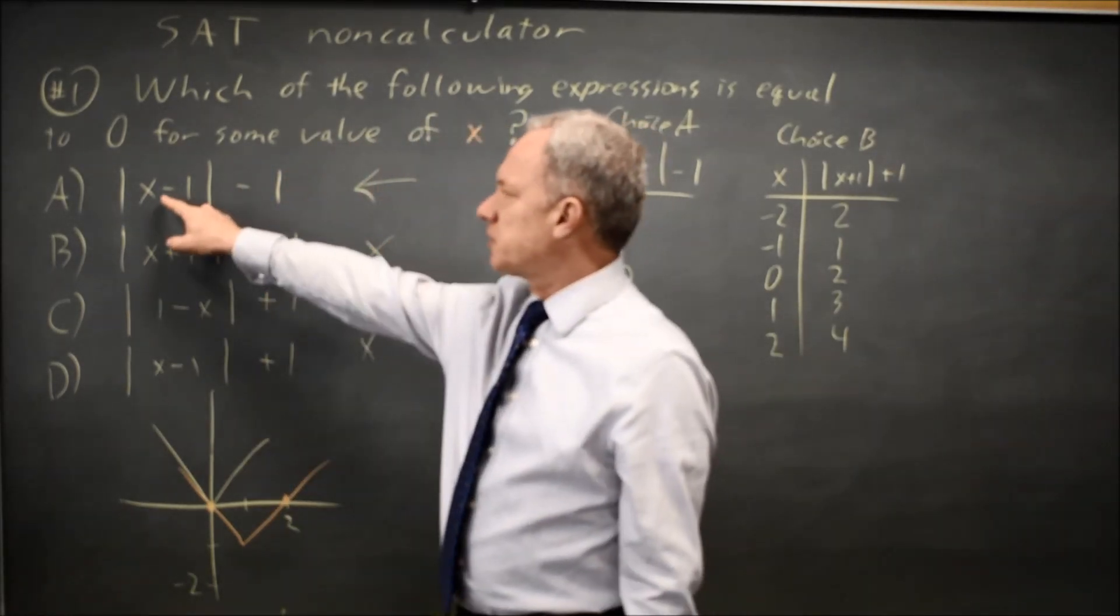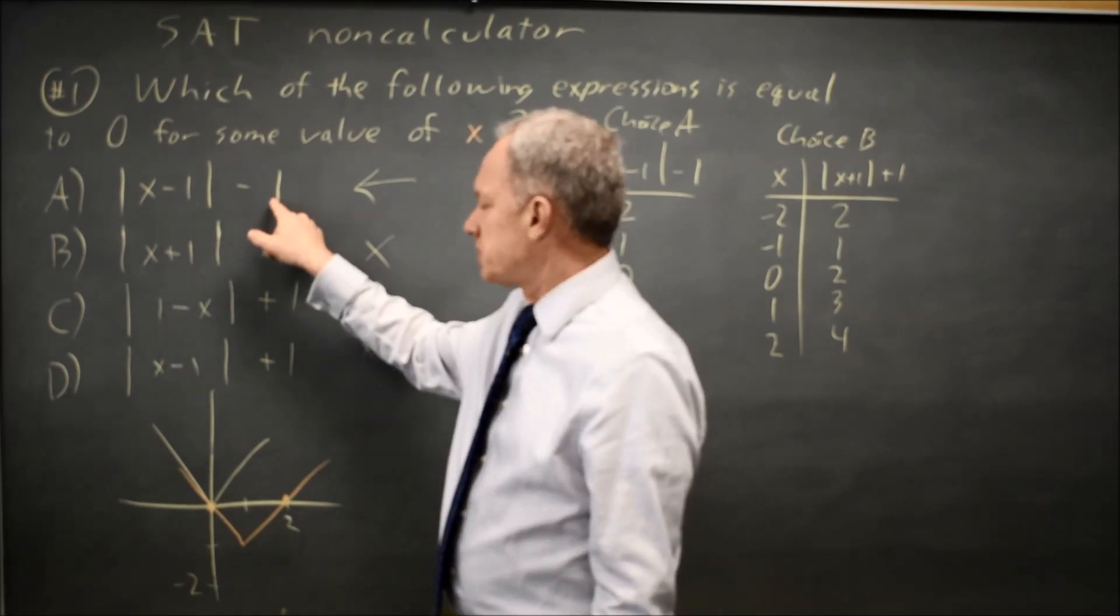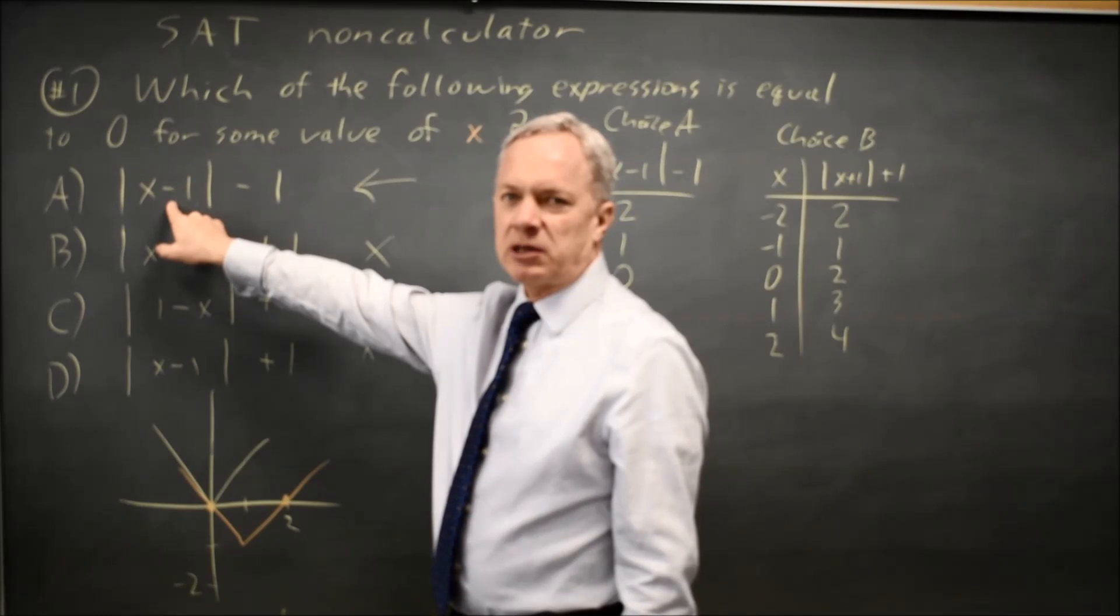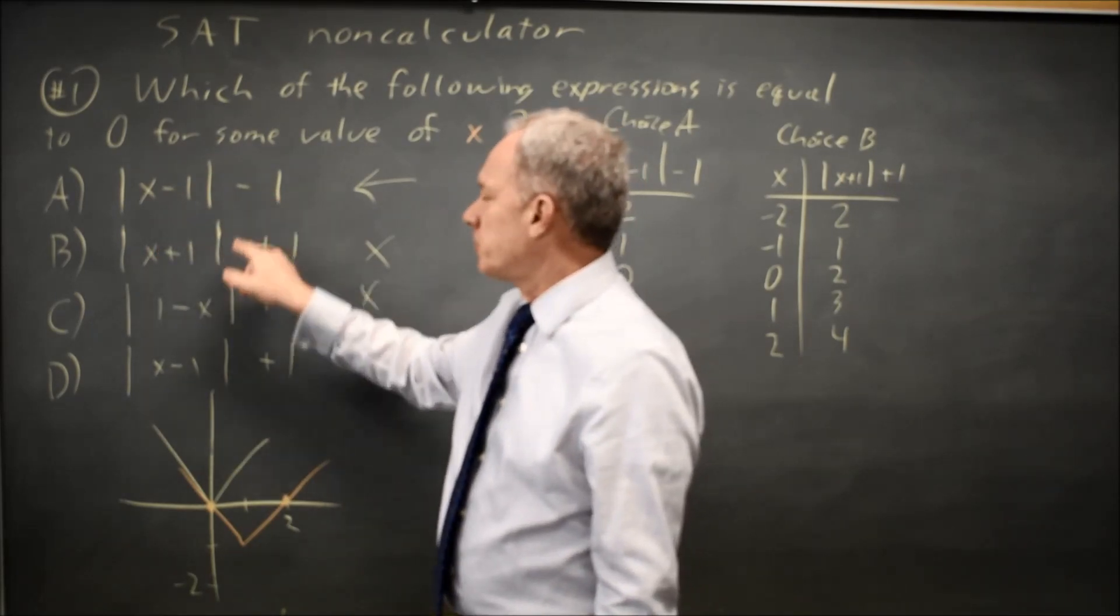And we have two zeros. At x equals two, I get two minus one is one, absolute value one, minus one is zero. And at zero, I get zero minus one is negative one, absolute value negative one is positive one, subtract one and we get zero.